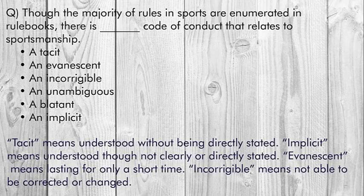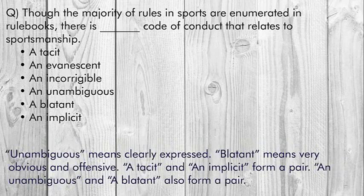Tacit means understood without being directly stated. Implicit means understood though not clearly or directly stated. Evanescent means lasting for only a short time. Incorrigible means not able to be corrected or changed. Unambiguous means clearly expressed. Blatant means very obvious and offensive. Tacit and implicit form a pair; unambiguous and blatant also form a pair.